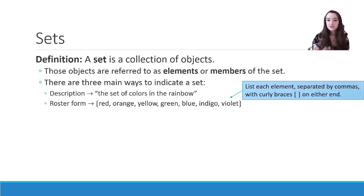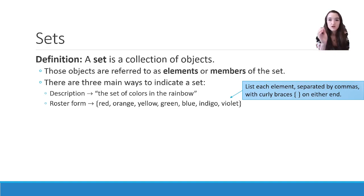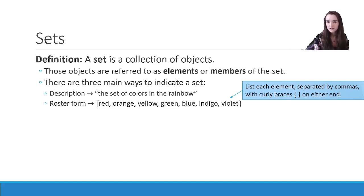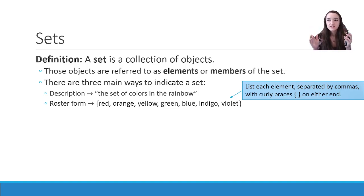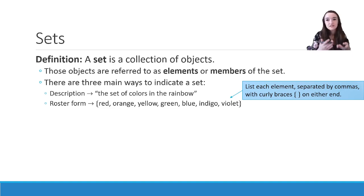Next is roster form. In this form, we list each element separated by commas with curly braces on either end. So the colors in the rainbow are: {red, orange, yellow, green, blue, indigo, violet}. We have to use these curly brackets to indicate that we are forming a set — that's read in mathematical terms as 'the set containing these things.' So if you don't put the curly brackets and you just list the things, I will mark it wrong. It is not in set notation, it is not in roster form.